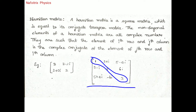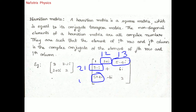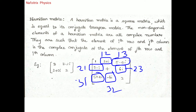In a 3×3 Hermitian matrix example, the complex conjugate of 2+i is 2−i, so the (1,2) and (2,1) elements match. The complex conjugate of 5−4i is 5+4i, and 6i has conjugate −6i. So the (2,3) and (3,2) elements are −6i and 6i respectively — all non-diagonal elements are complex conjugates of each other.